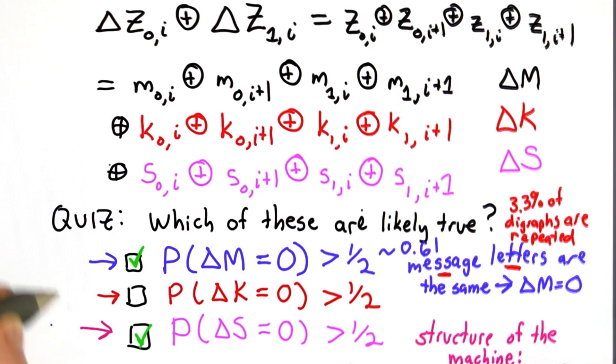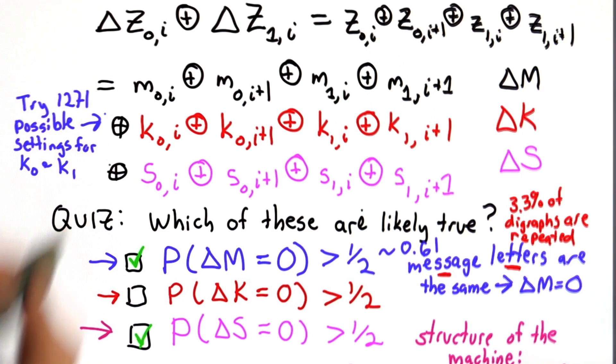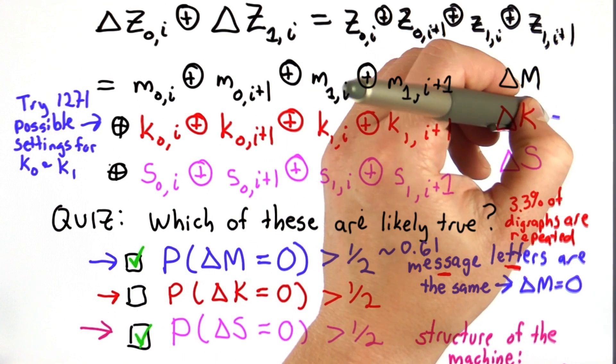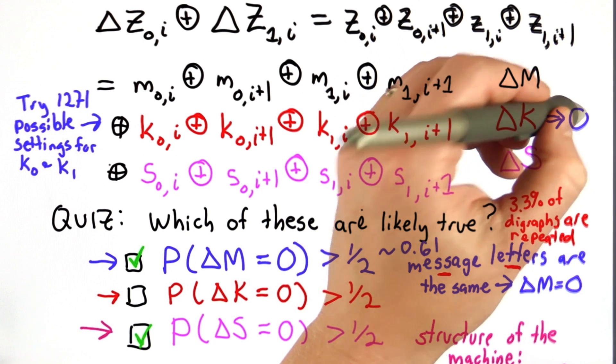And now we've concluded that we're going to try 1,271 possible settings. For one of those possible settings, we're going to know all the key bits, and that means if we guess the right setting, the key will go to 0.